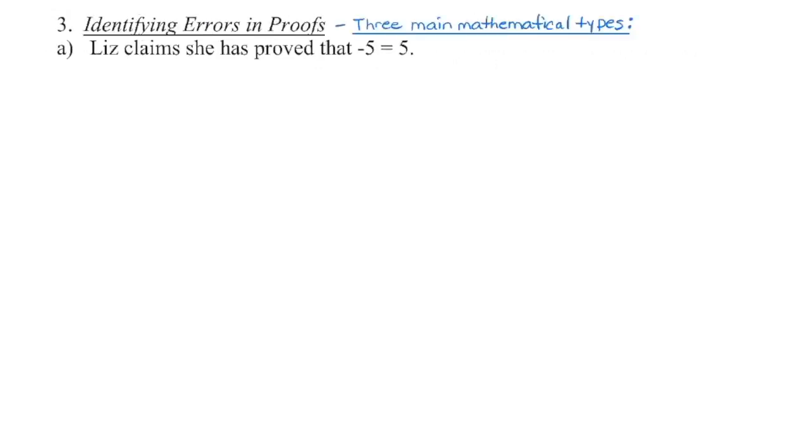We're going to switch over to the mathematical side right now where there are three main types of errors that can occur within a proof. In the first one, we have somebody claiming that they have proved that negative 5 is equal to positive 5. Well, we know right away that's not true. Let's go through the argument and try to identify where the error is. So we're going to go step by step here. So first of all, we have Liz who assumes that negative 5 is equal to positive 5.